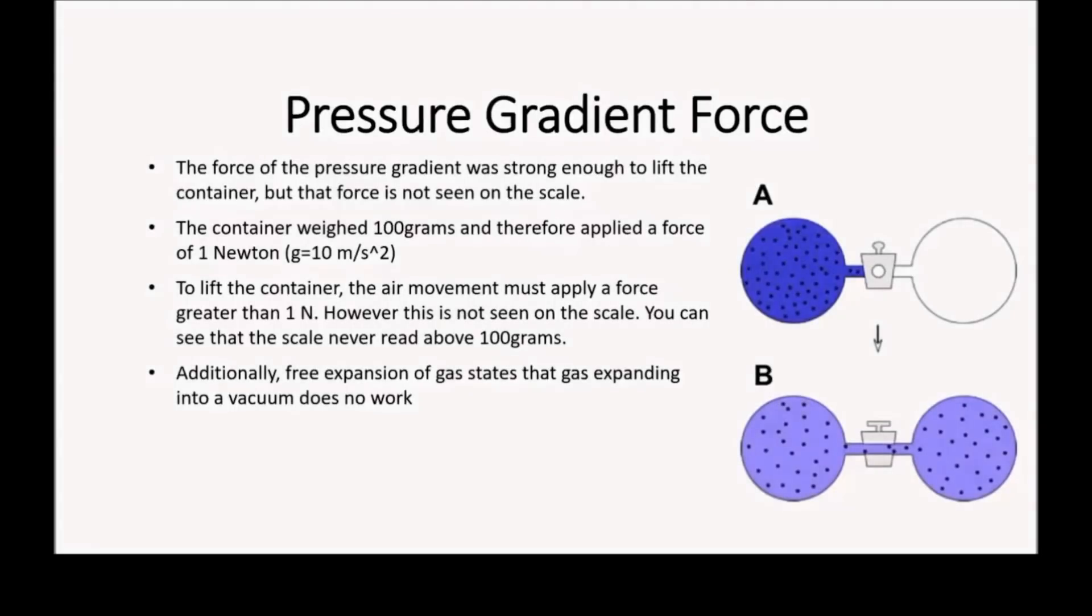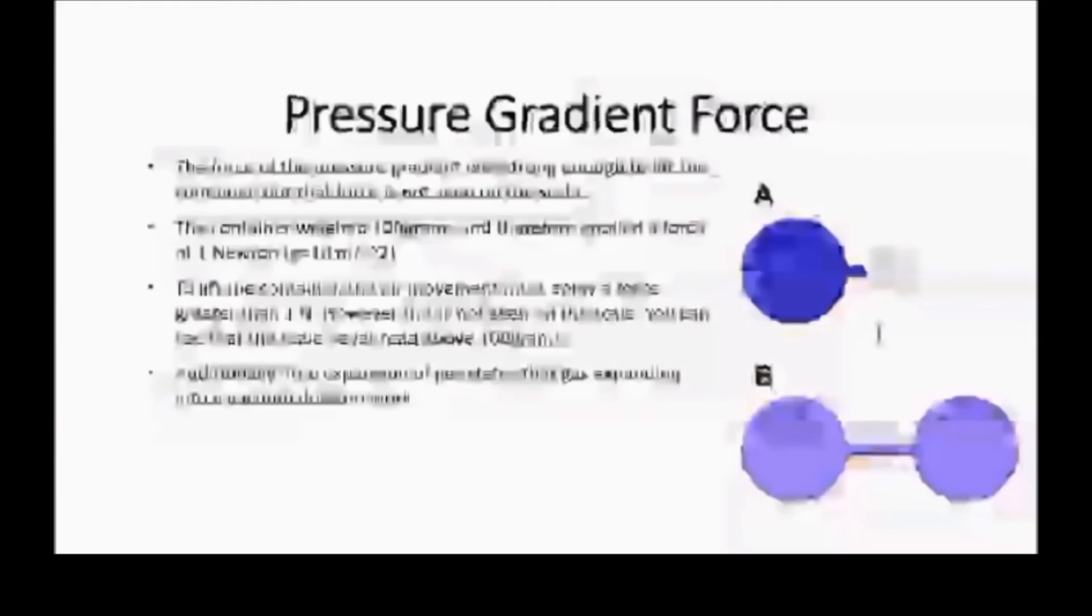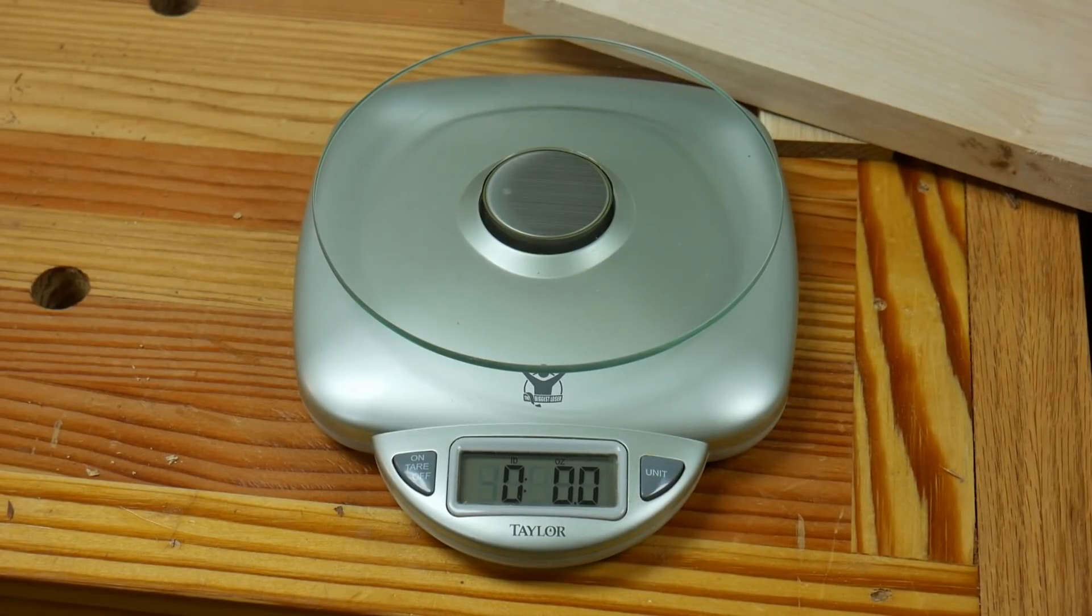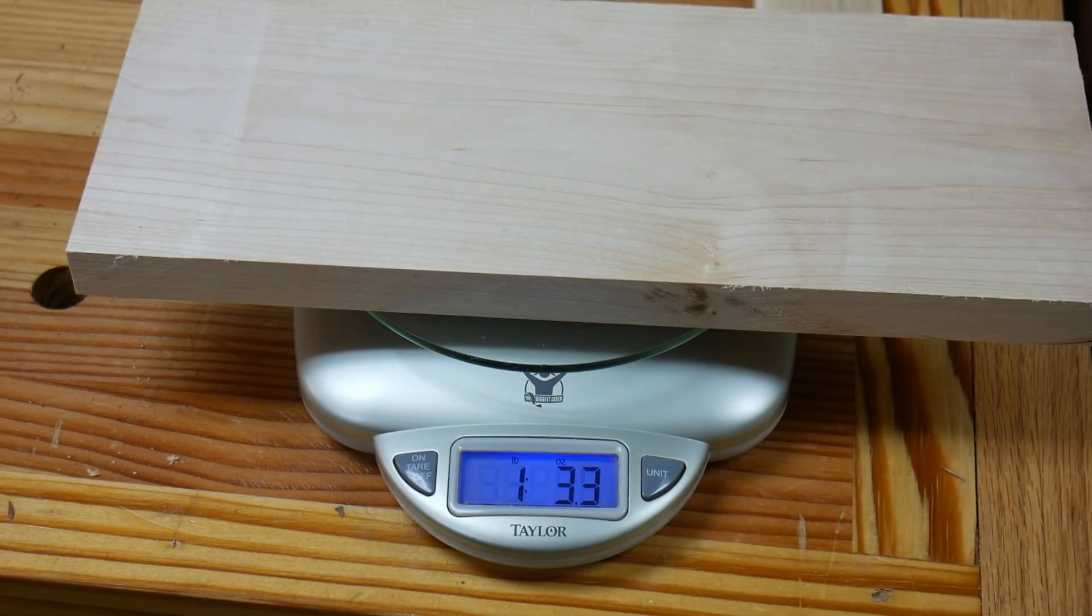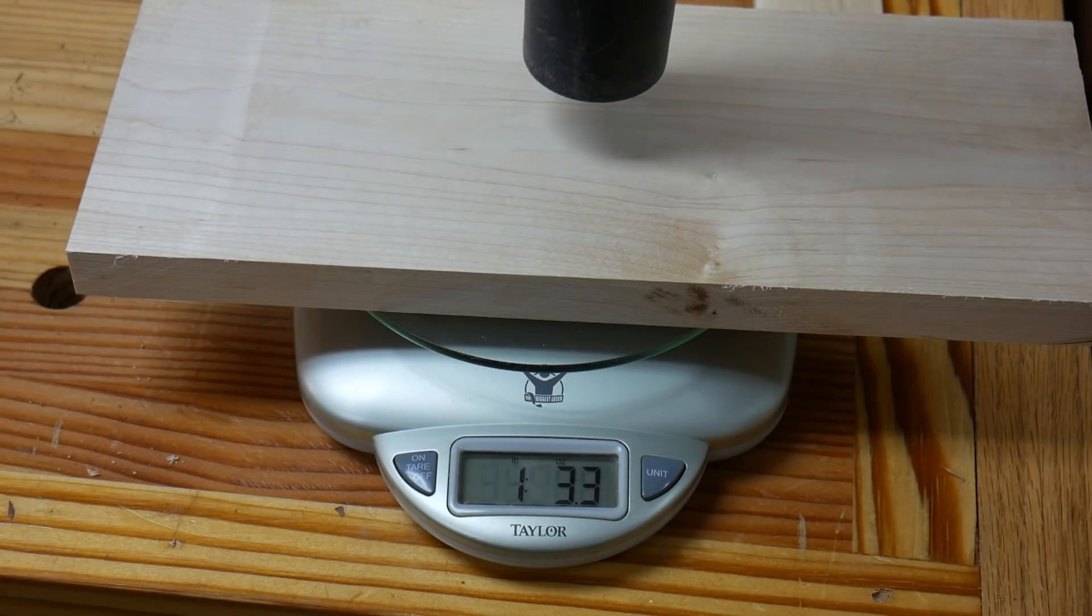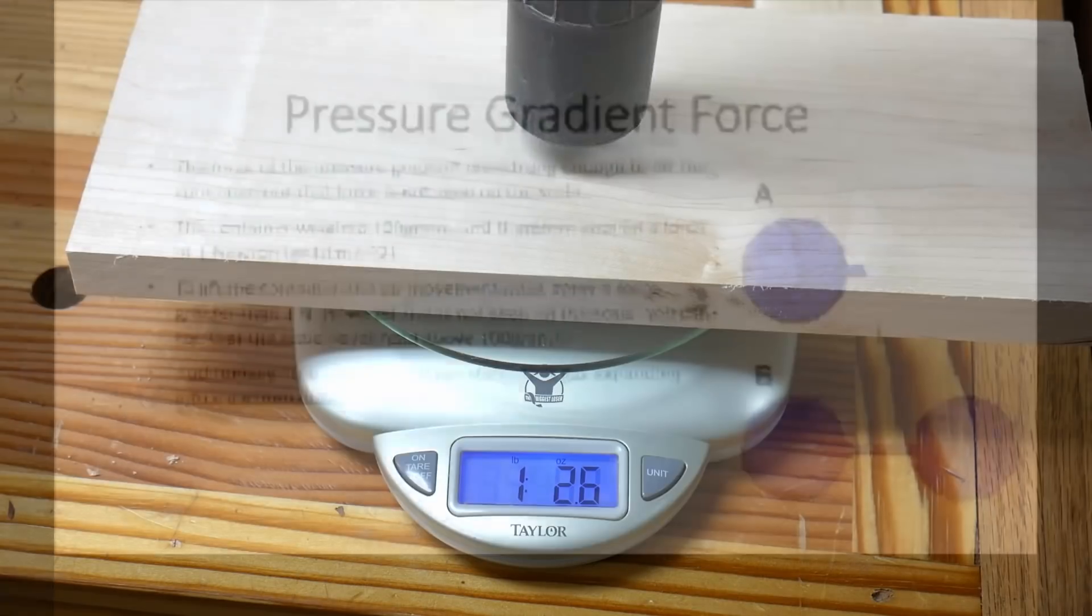As you saw in the video, the pressure gradient force was strong enough to lift a container, but that force is not seen on the scale. To lift the container, the air movement must apply a force greater than one newton. However, this is not seen on the scale. You can see that the scale never read above 100 grams or more than one newton. What you just said is one of the most insanely idiotic things I have ever heard. Spurs, you seem to have suck and blow confused. Creating an area of negative pressure above an object sitting on a scale will not cause the object to weigh more. It will cause it to weigh less. If you want the object to weigh more, blow on it.